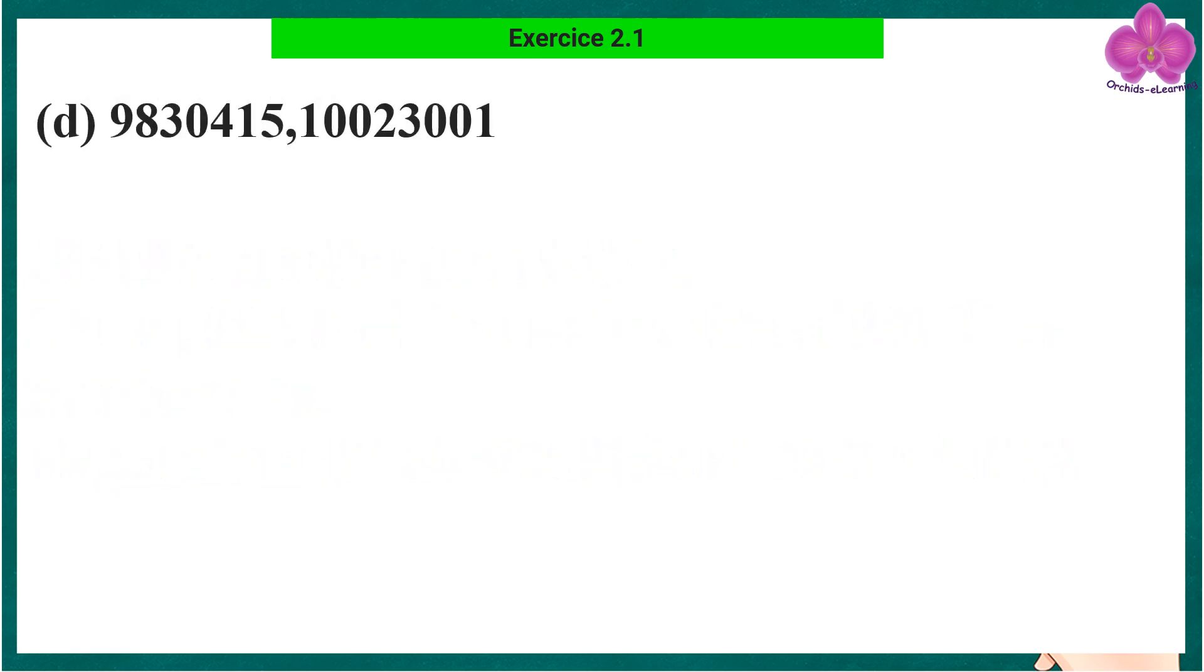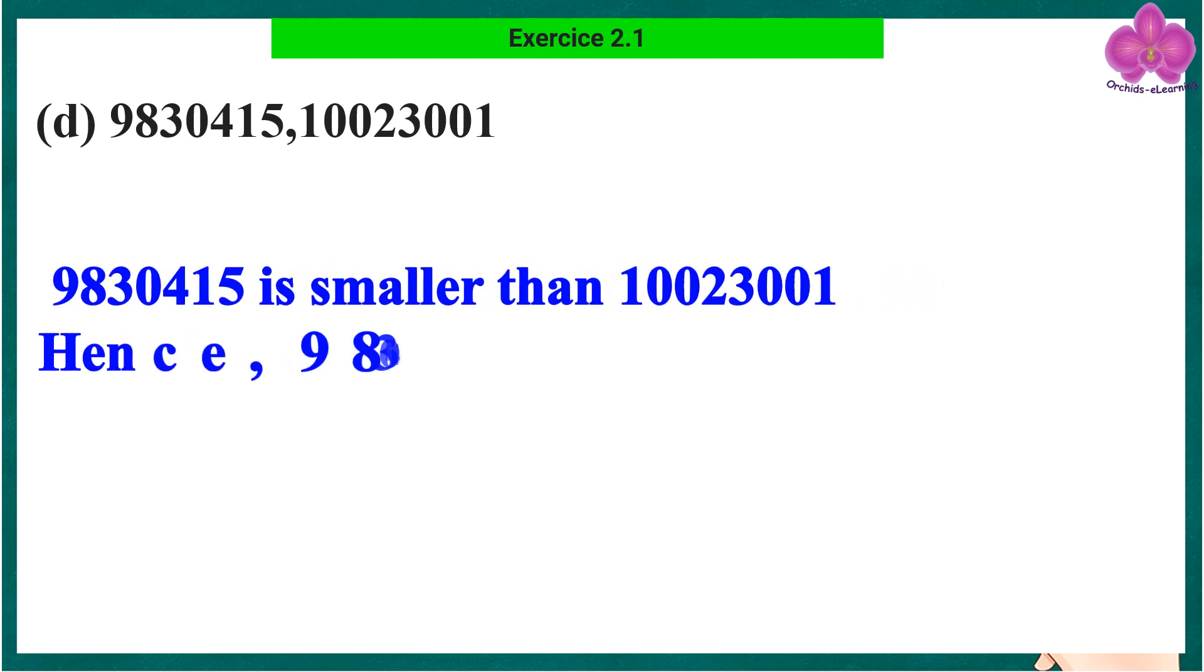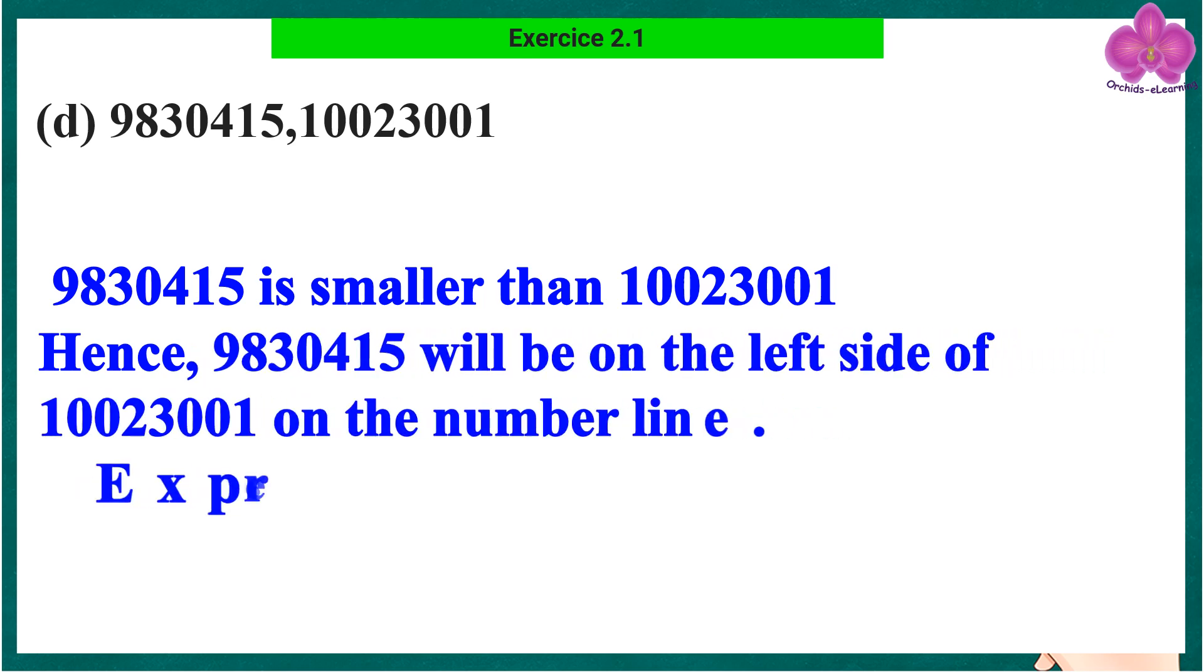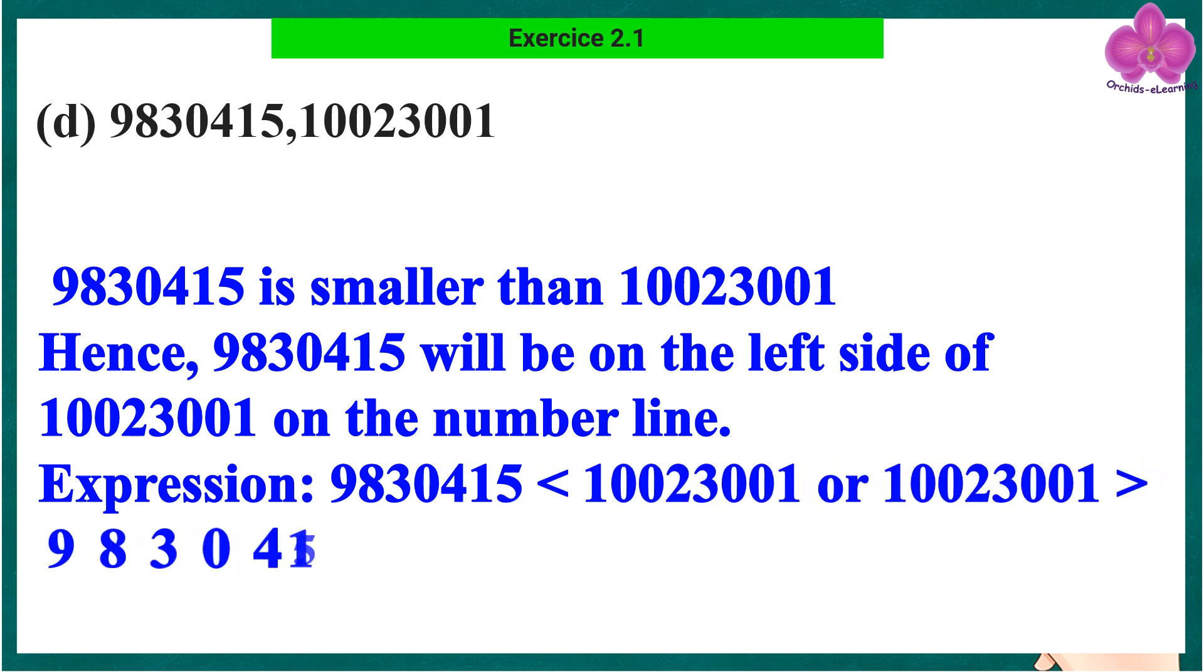Part d: 98,830,415 and 1 crore 23,001. 98,830,415 is smaller than 1 crore 23,001. Hence, 98,830,415 will be on the left side of 1,00,23,001 on the number line.